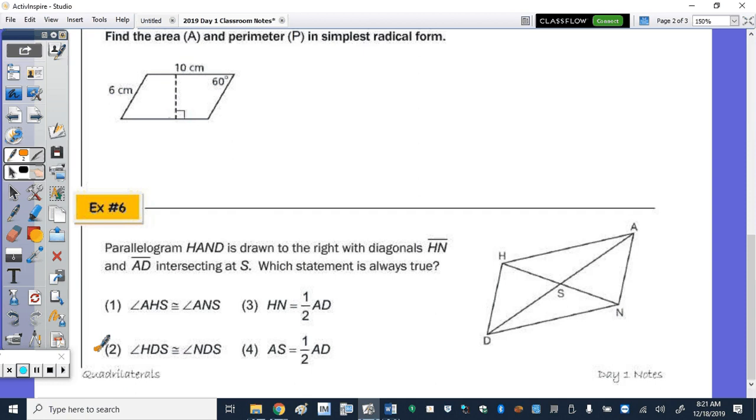HDS. So HDS, this angle here, is that congruent to NDS? No. So the diagonal does not bisect the angle. Nope. So one and two are out. Three. HN is half of AD. So HN, well HN is a diagonal. AD is a diagonal. No. One is not necessarily half of the other. So it must be four. So let's look at four.